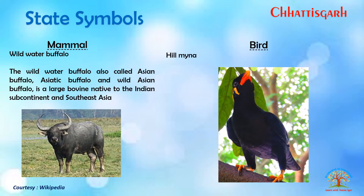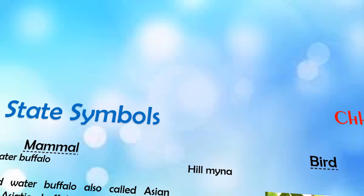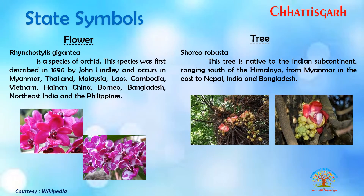The state mammal is the wild water buffalo and the state bird is the Hill Myna. The state flower is a species of orchid, first described in 1896 by John Lindley, which also occurs in Myanmar, Thailand, Malaysia, and other countries. The state tree is Shorea robusta, native to the Indian subcontinent, ranging from the south Himalayas through Myanmar in the east to Nepal, India, and Bangladesh.